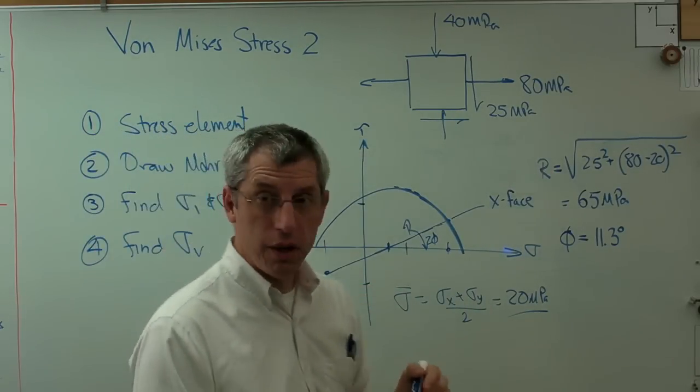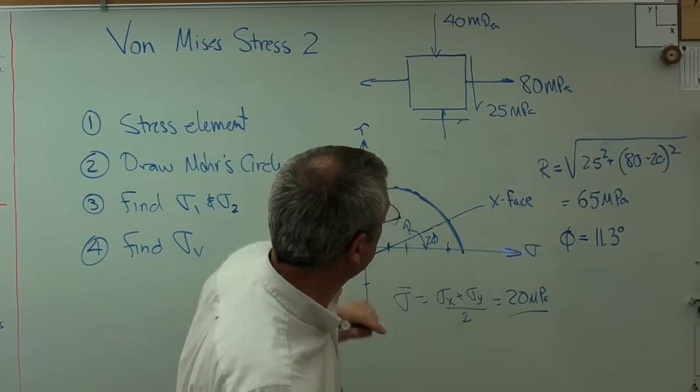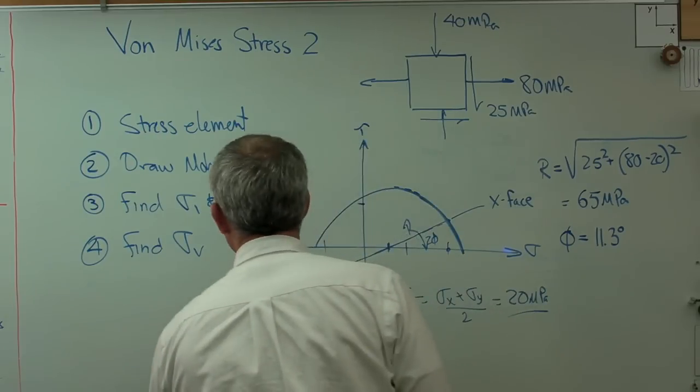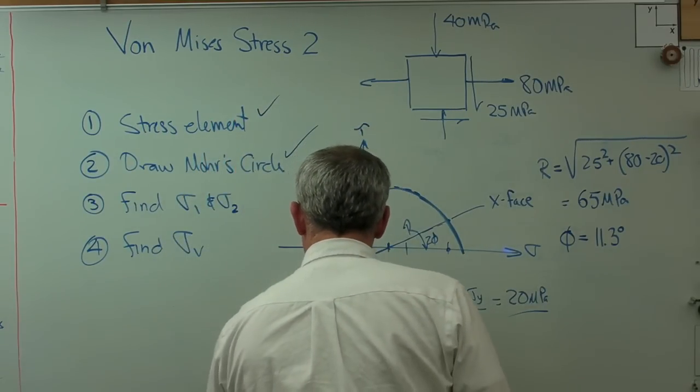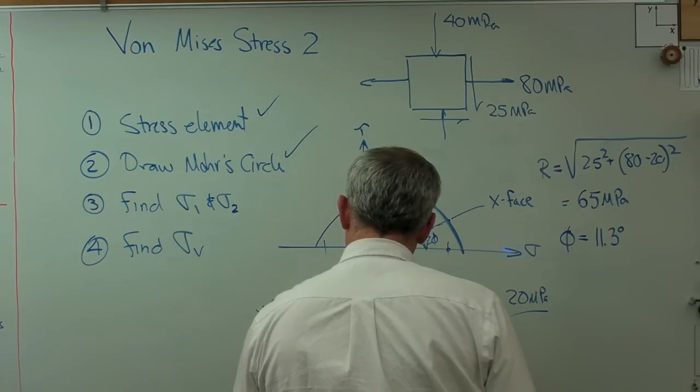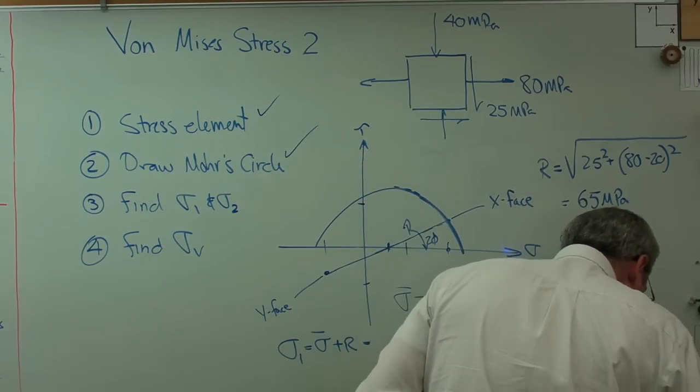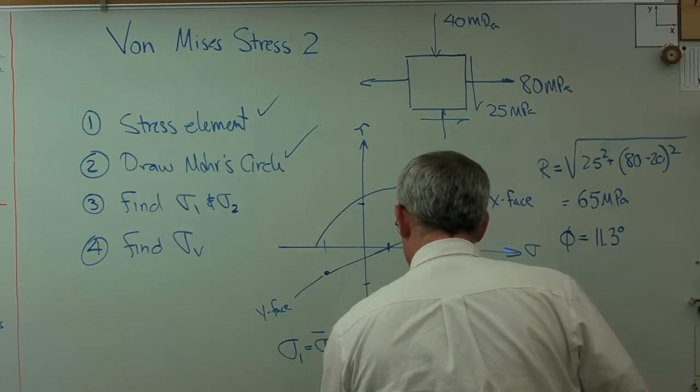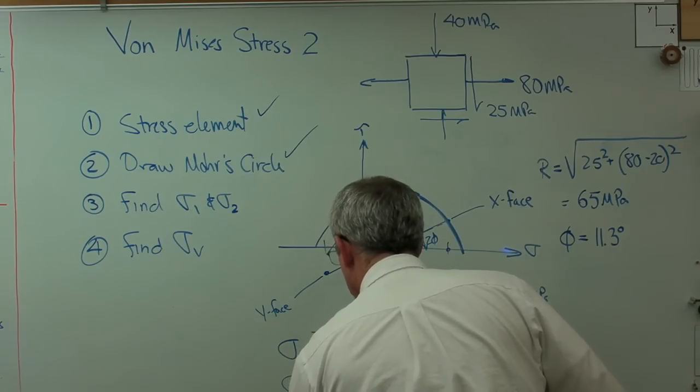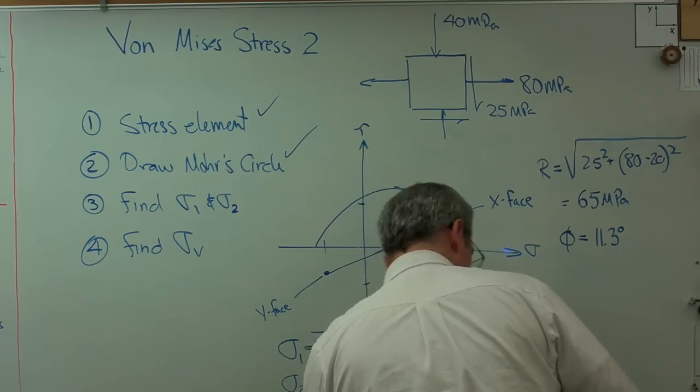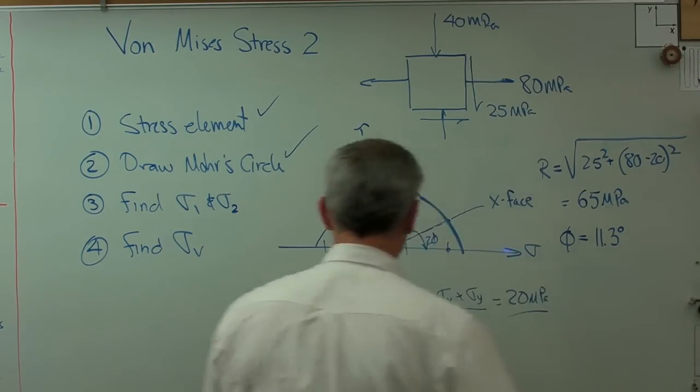Now, I still need to know sigma 1 and sigma 2. Well, sigma 1 is going to be sigma bar plus the radius. So, let's see. Let's write this out here. Sigma 1 equals sigma bar plus r. And that's going to turn out to be, oh, let's see, 85 megapascals. I could have figured that out without looking. And sigma 2 is going to be sigma bar minus r. And that works out to minus 45 megapascals. Okay.